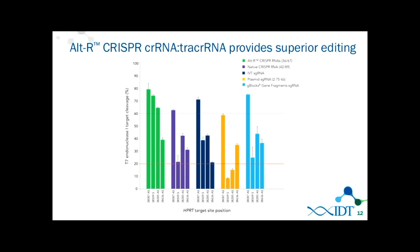Here's a comparison showing four different sites — four different crRNAs paired with the tracrRNA. In green is using the optimized crRNA in the 36-nt/67-nt alt-R system — the modification and length improvements we've developed — compared to the natural system, still split into two components. You can see an increase in editing across all four sites compared to delivering this as an in vitro transcribed sgRNA, as a plasmid, or as a G-block. This is a nice snapshot of the level of editing we've achieved after optimizing both length and modifications.